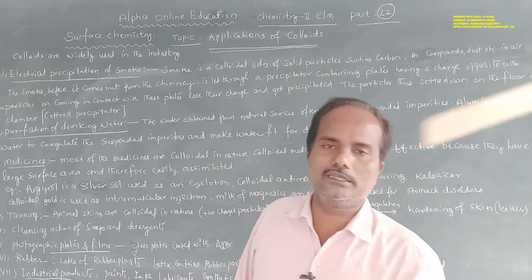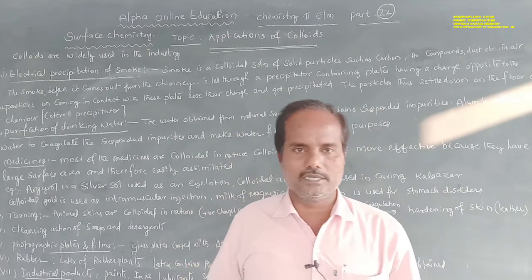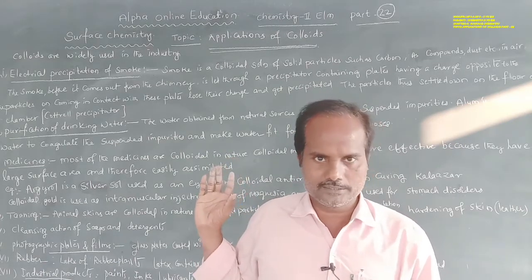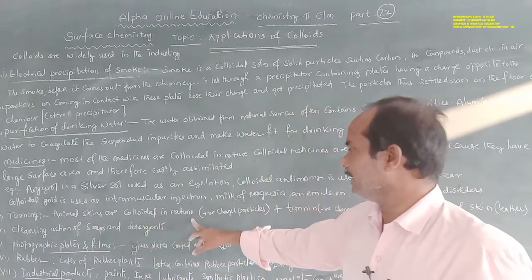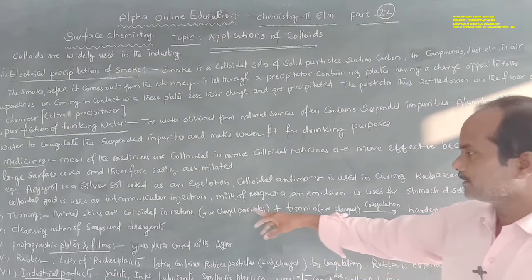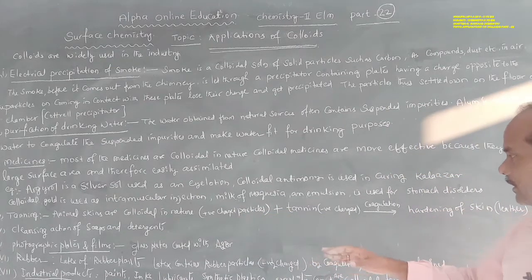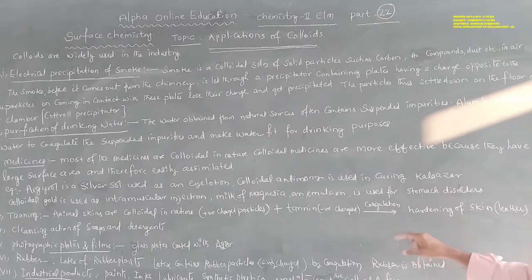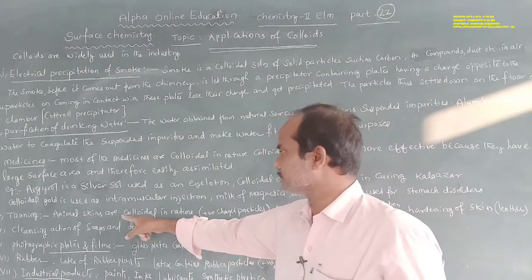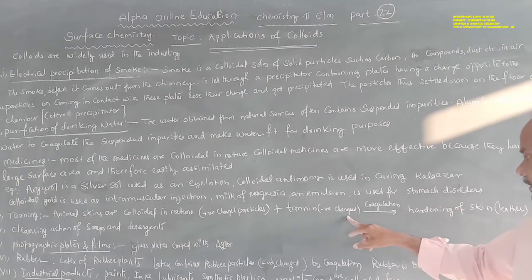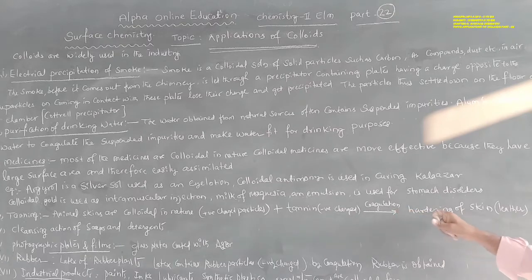The next application is tanning, which is used in the leather industry. Animal skins are colloidal in nature and carry positively charged particles. When these animal skins are treated with tannins, which carry a negative charge, the positive charge of the skin particles is neutralized by the tannins. As a result of this coagulation, hardening of the skin takes place, and that is called leather.